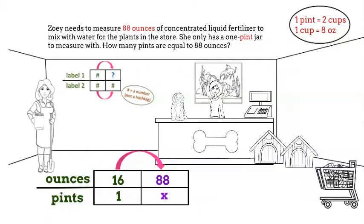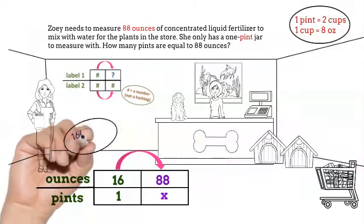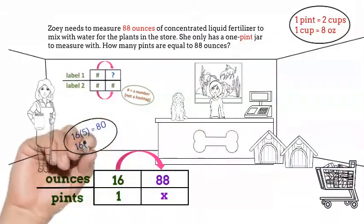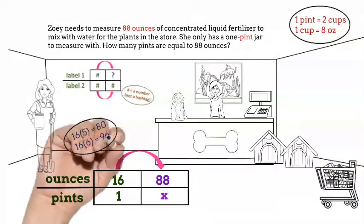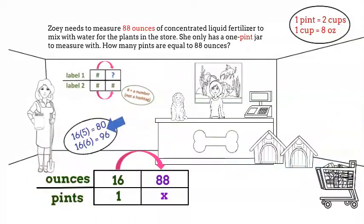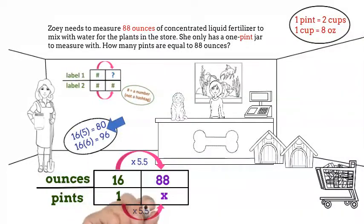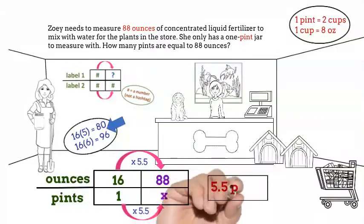What can we multiply 16 by to get 88? Well, I know that 16 times 5 is 80 and 16 times 6 is 96. Since 88 is right in the middle, 16 times 5.5 is 88. Now we simply need to multiply 1 times 5.5 and we'll have our answer. That's right — 88 ounces equals 5 and a half pints.